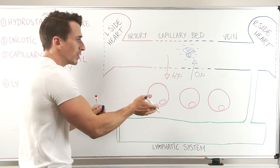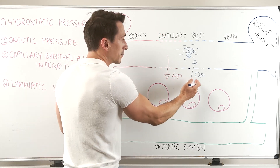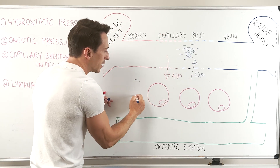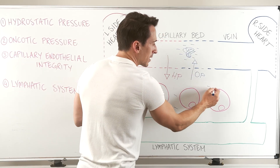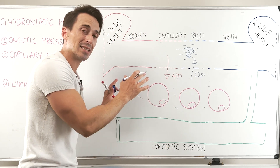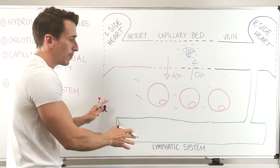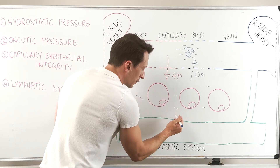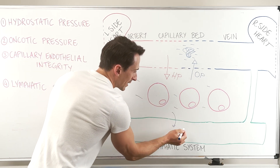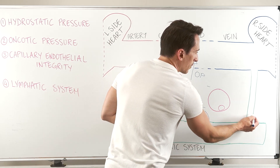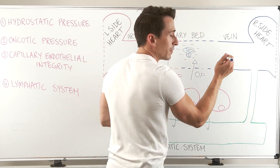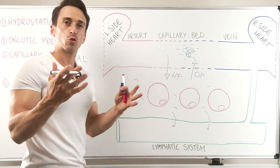But not all the fluid that gets pushed out gets pulled back in. Some remains in the space between the cells, called the interstitial area. This fluid can be dragged into the lymphatic system, which can then be delivered back to the venous system.